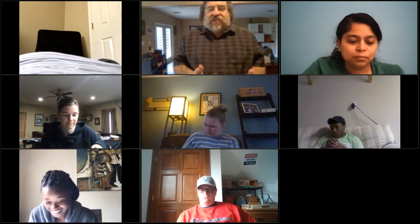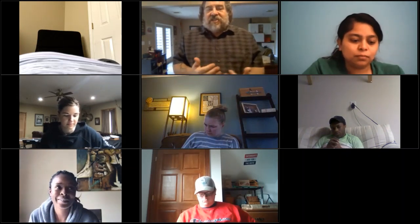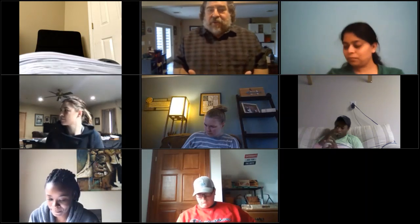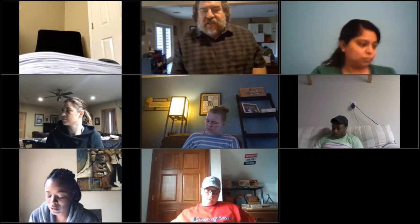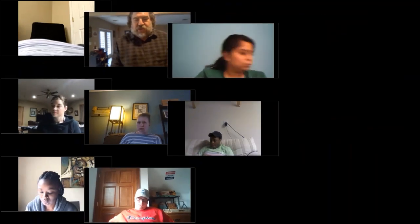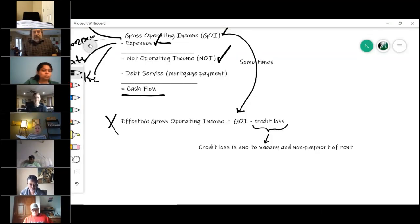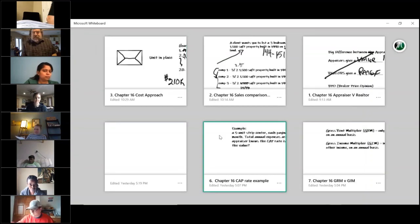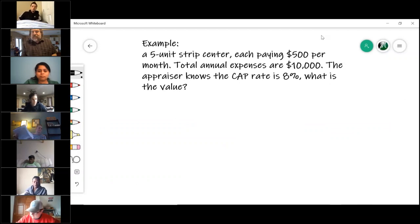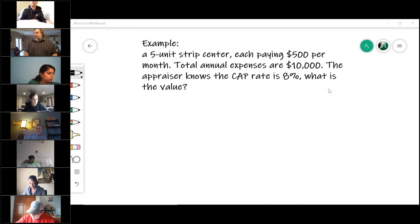Okay, we're going to keep moving. So gross operating income minus expenses equals the net operating income. Very important you know that, because the third method that we're going to talk about is the income method, which deals with the value based upon the income that it uses.